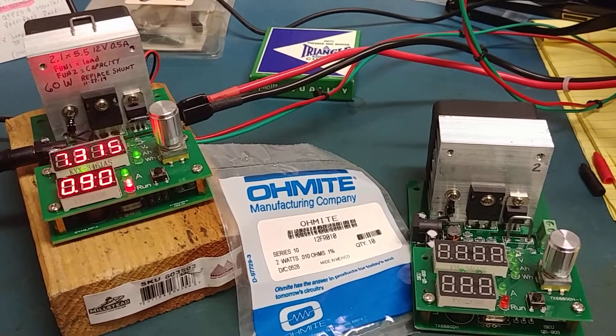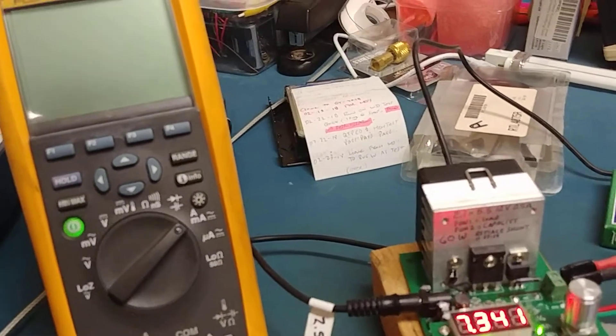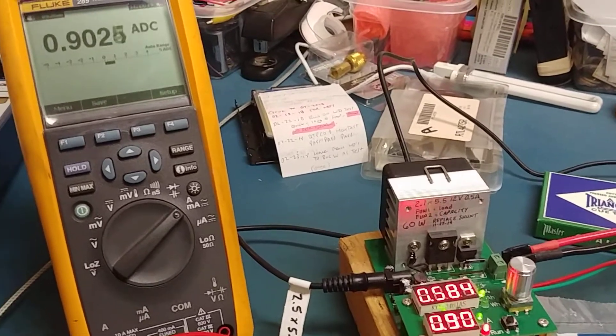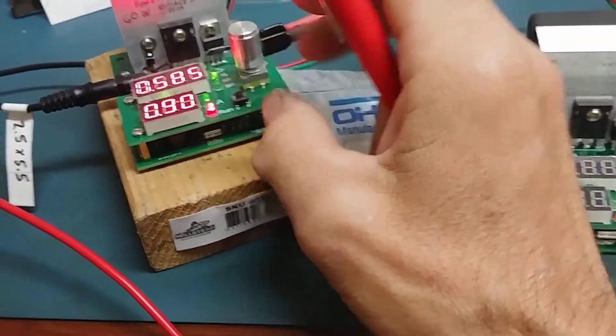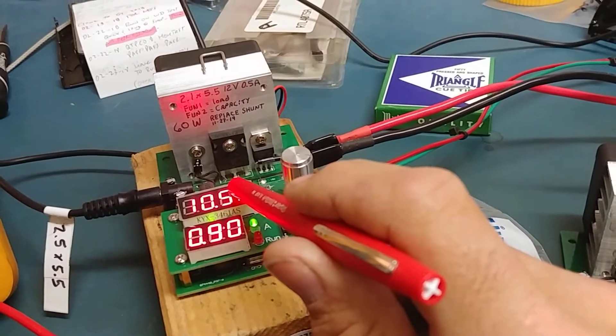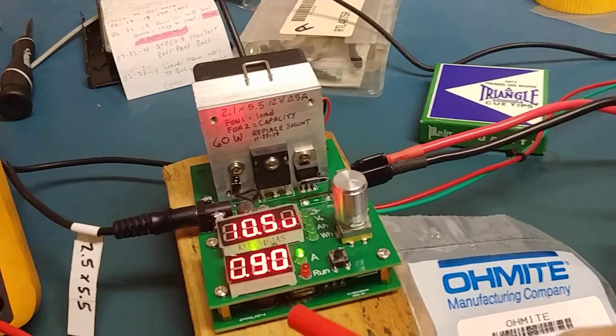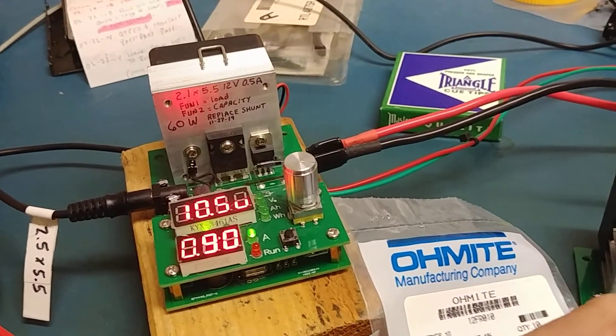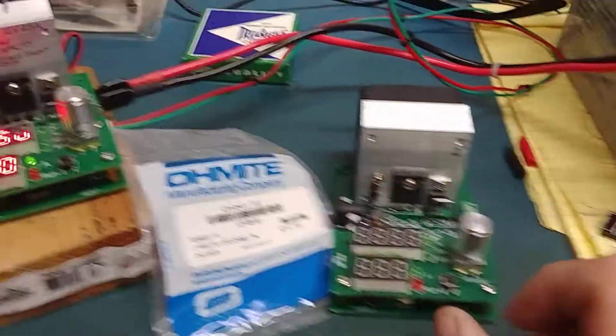And what I was doing was correcting for that with the calculator because I would verify what the current draw was with a Fluke. And it was annoying to sit there and have to go and at the end when you would finish your test, it would show you what amp hour capacity the battery was, but that test was not correct. It was slightly off because when the tester thought that it was drawing 900 milliamps, it was actually drawing sometimes 935 milliamps, 950 milliamps. It depended on the tester. I have a bunch of these things.